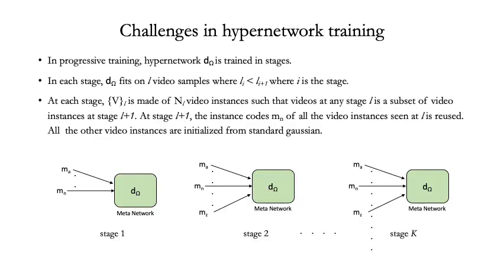In progressive training, we train D in stages. At each stage, D only sees a subset of all the training examples. We progressively increase the number of examples at each stage such that the video instances at each stage are a subset of the video instances at the next stage. The video code of each video V learned at stage L is then reused at the next stage L+1.